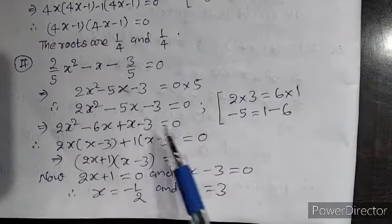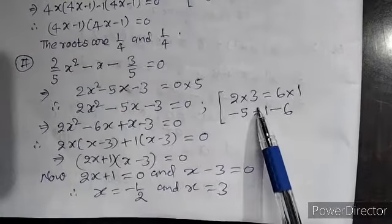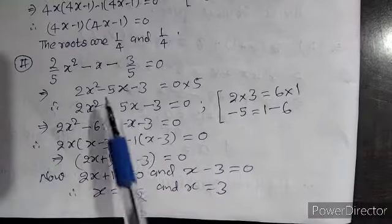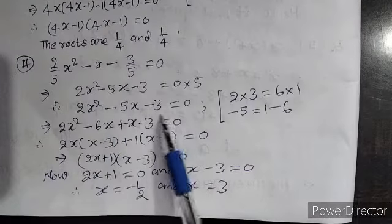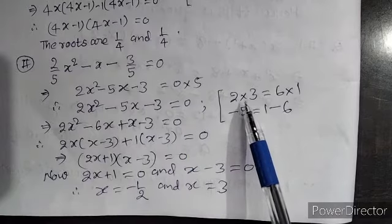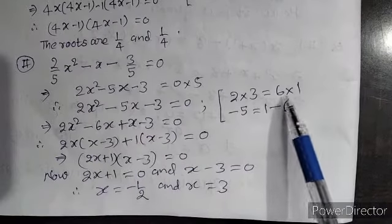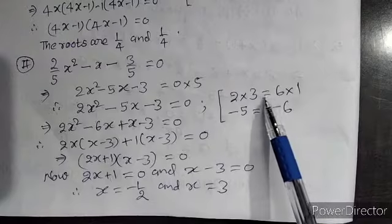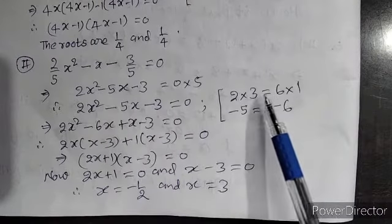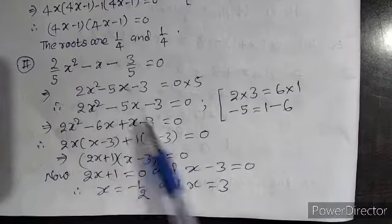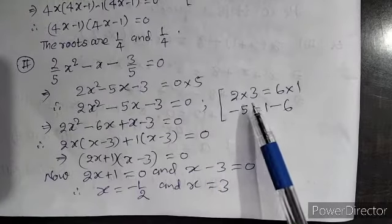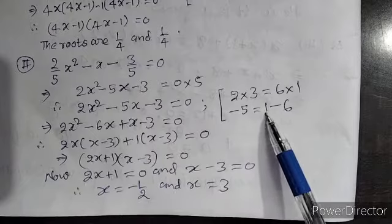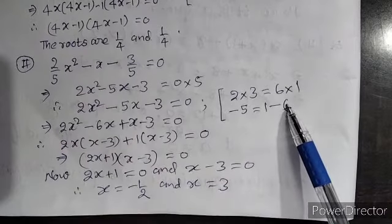Now, taking 2 into 3, because 2 is the coefficient of x square and the constant term is 3. So, right here 2 into 3 equal to 6 into 1. It may be written as 6 into 1. You have to find the middle term as minus 5. So, minus 5 is from factors of 6 and 1 can be found as 1 minus 6. Therefore,